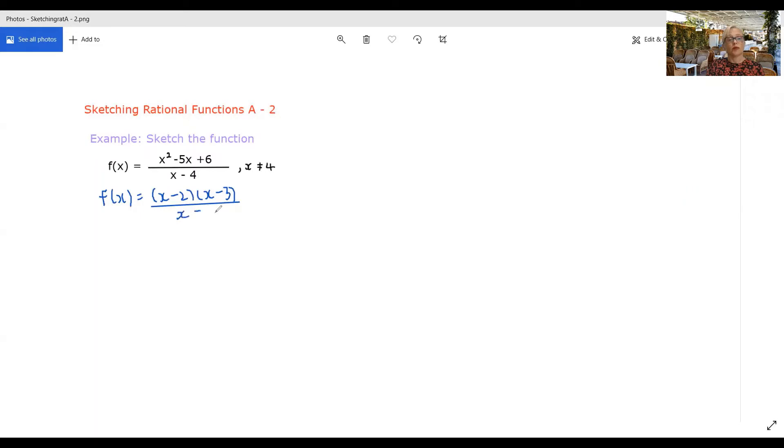Now, what we're going to do also is we're going to do a polynomial division. So we have our x squared, I'll do it up here, x squared minus 5x plus 6 divided by x minus 4.